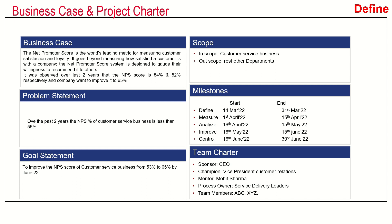The project charter has six elements: business case, problem statement, goal statement, scope of the project, milestones, and team charter. The goal is to improve the NPS score of the customer service business from 53% to 65% by June 2022. The scope of the project: in-scope is the customer service business, and out of scope is the rest of the other departments. The project started on 14th March 2022 and was targeted for completion by 30th June 2022.